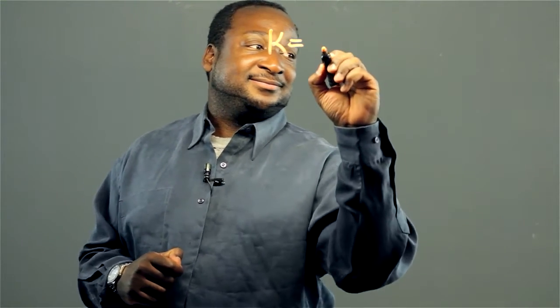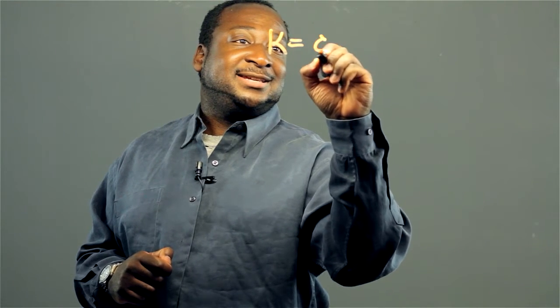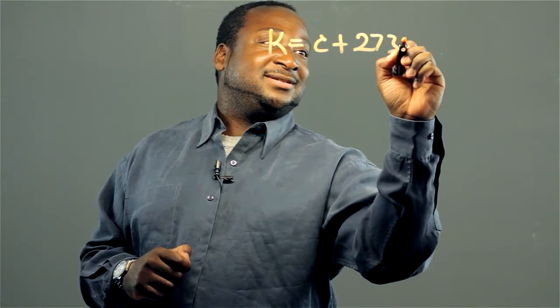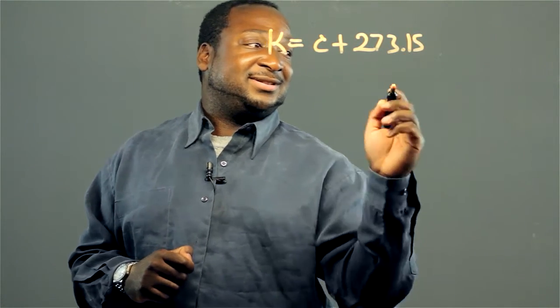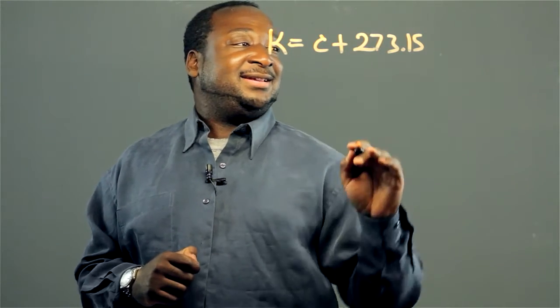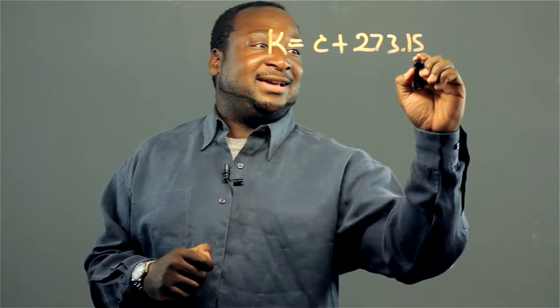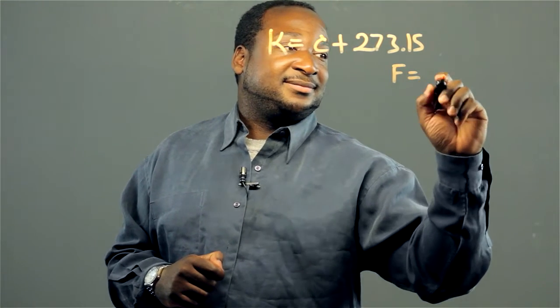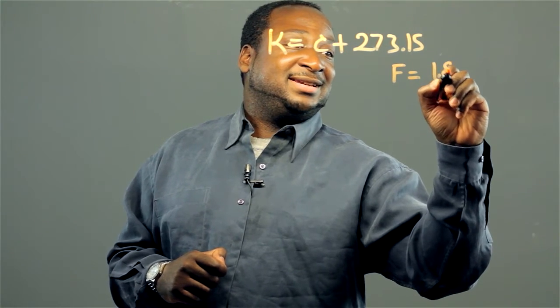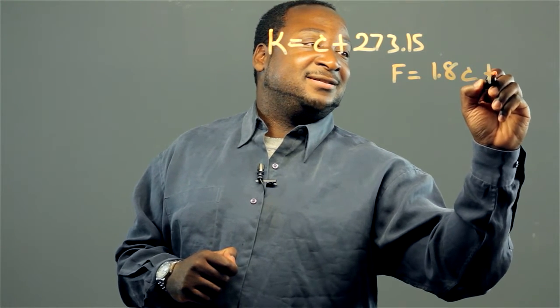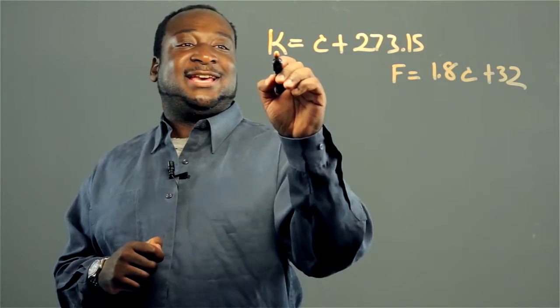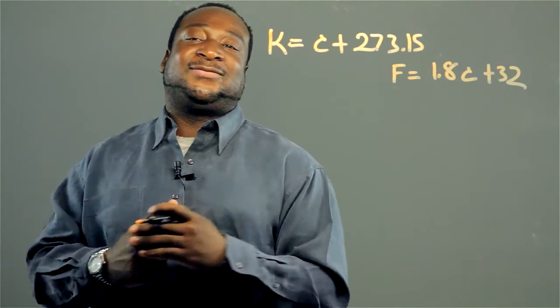The temperature in Kelvin is equivalent to C plus 273.15 degrees. Your temperature in Fahrenheit is equal to 1.8 C plus 32. The K is for Kelvin, C is for Celsius, and the F is for Fahrenheit.